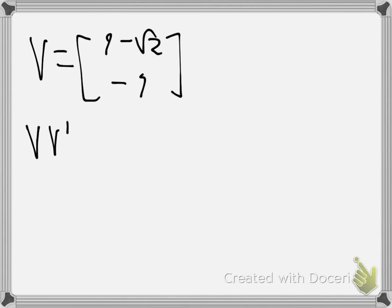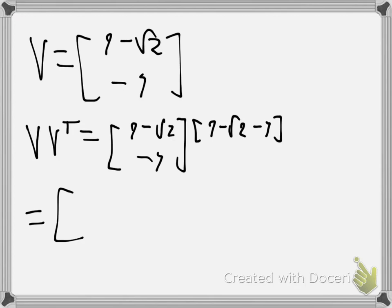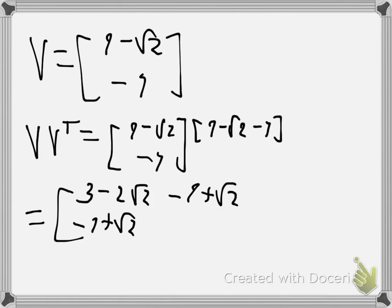V-transpose will be the row vector [1 - √2, -1]. Then V times V-transpose gives us the matrix with entries: 3 - 2√2, -1 + √2, -1 + √2, and 1.